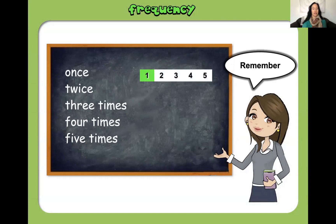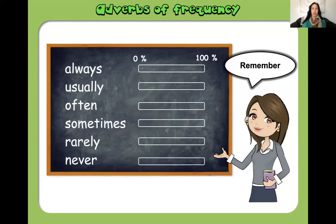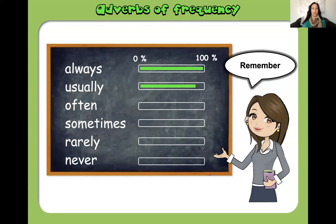Remember: once, twice, three times, four times, five times — think of these as days of the week. So: once a week, twice a week, three times a week, four times a week, or five times a week. Our adverbs of frequency scale: always is 100%, usually is around 80–90%, often is like 60–70%, sometimes is 40–50%, rarely is maybe 10–20%, and never is 0%.